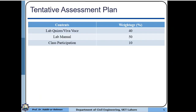The tentative assessment plan for this lab includes different tools: there will be at least one or two lab quizzes, possibly one around midterms and one around the end term. Online and on-campus vivas are also possible, and the lab manual will carry weightage. The exact percentages may vary, which is why it is tentative. Class participation will also carry a certain weightage, which may include attendance, complexity problems, and other assignments.